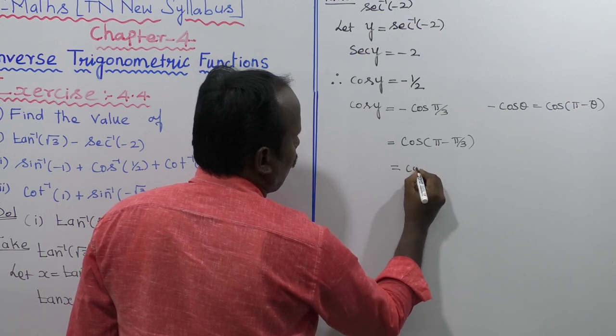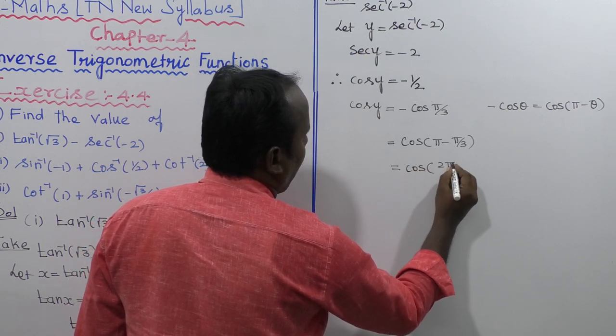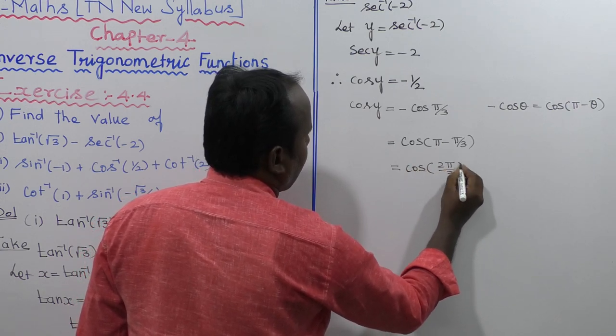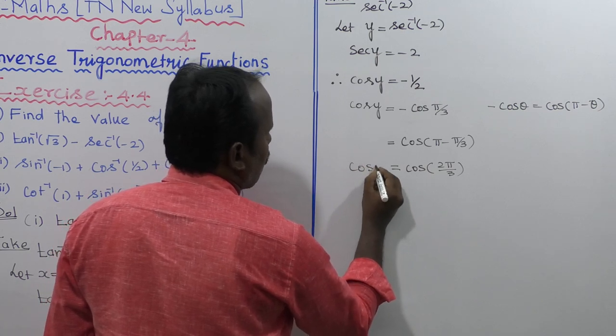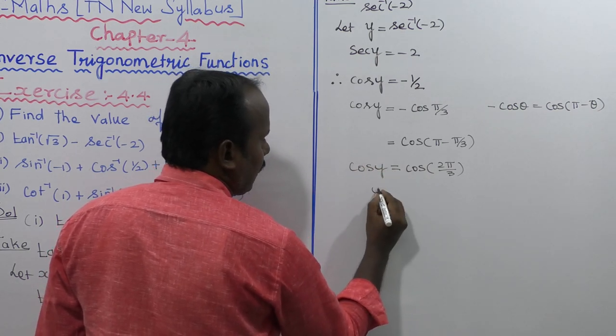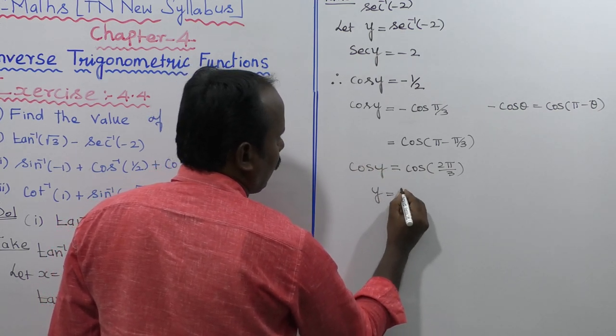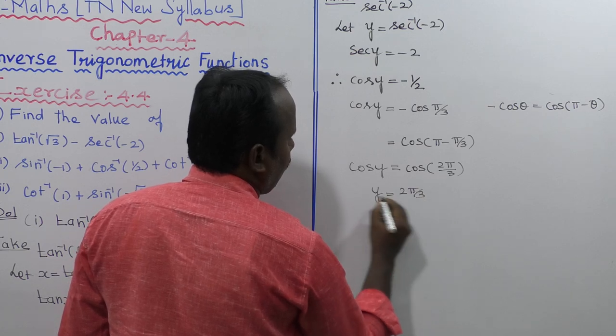So that gives us cos y equal to cos of pi minus pi by 3, which equals cos of 2 pi by 3. The cos and cos cancel, so y is equal to 2 pi by 3.